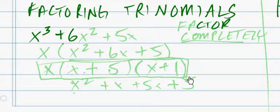X cubed plus 6x squared plus 5x. Now, what we want to do is factor this completely.